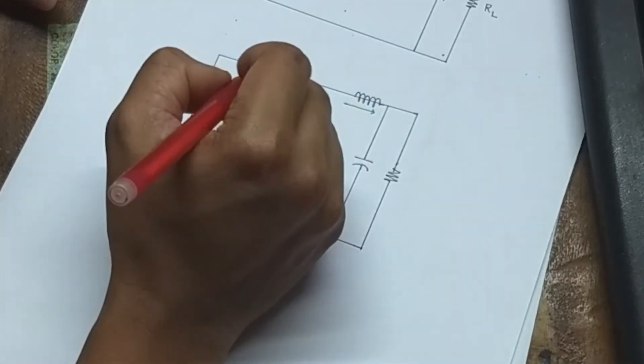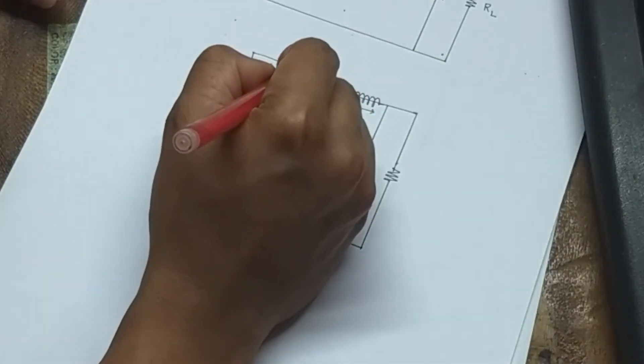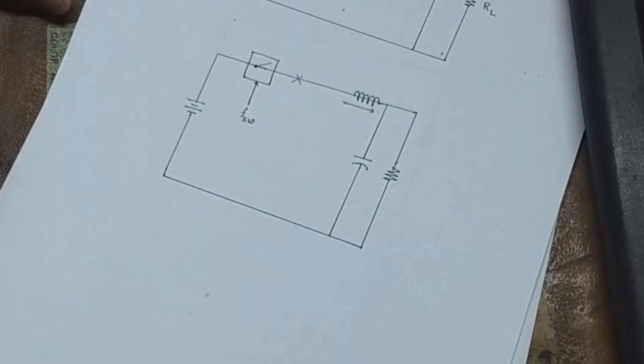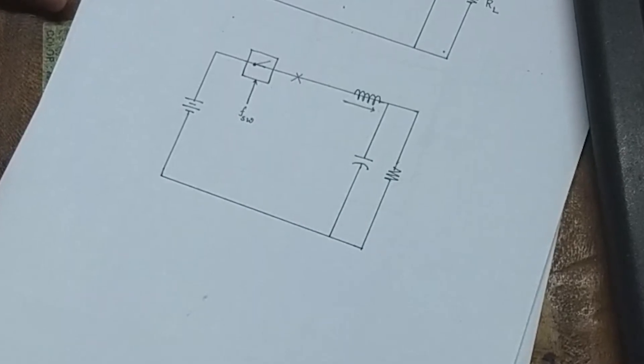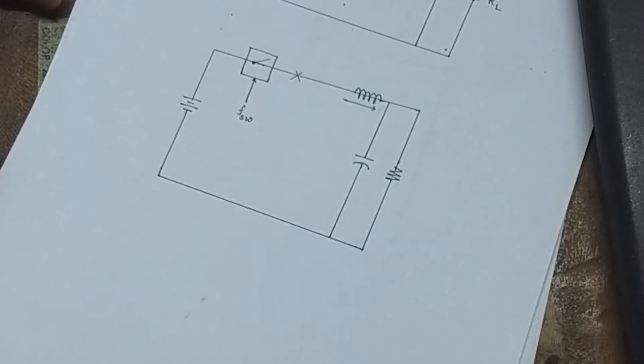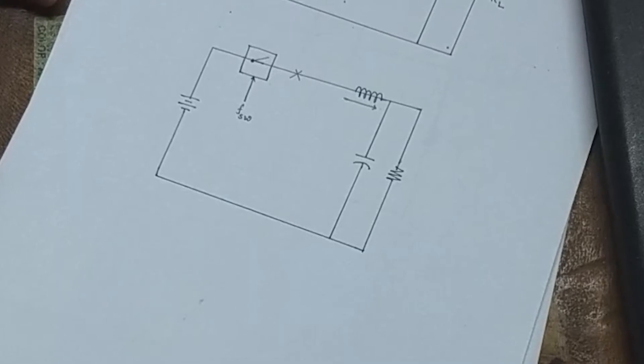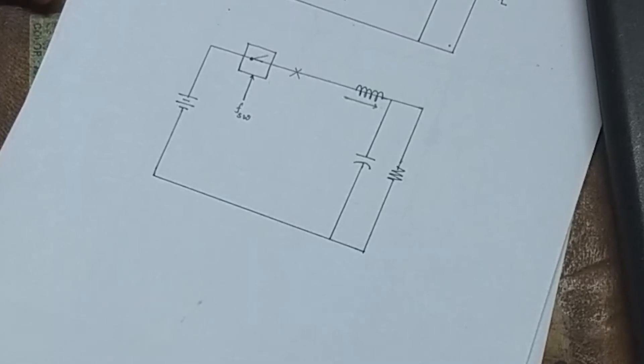One more problem is to be solved. When the switch is suddenly turned off, the circuit is broken. But the inductor will try its level best to keep the current continue to flow, because inductors don't like to change the current, as capacitors don't like change of voltage.